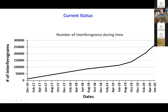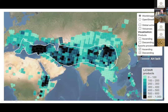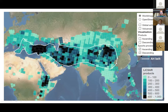The number of interferograms generated has grown significantly from 114,000 at the 2019 COMET meeting to over 280,000 in June 2020. A figure visually shows the processing status of all frames from the Alpine to the Himalayan region — black areas are already completed and are live frames. The whole region could potentially be complete in the next couple of months to have all InSAR products available.